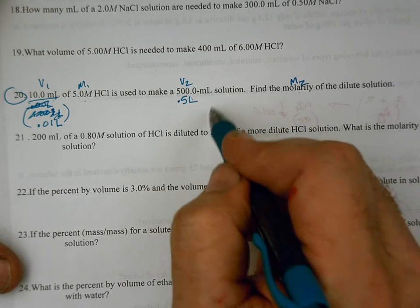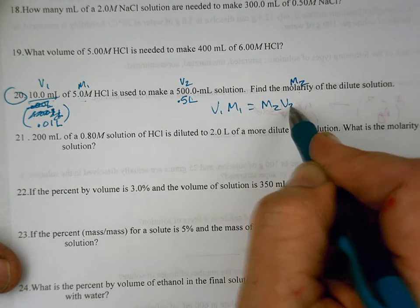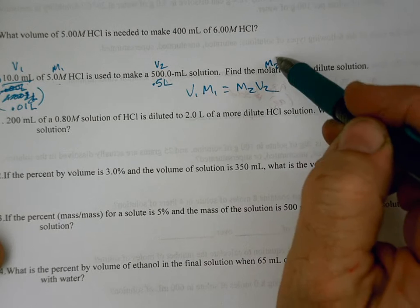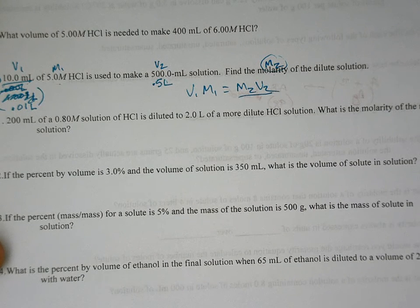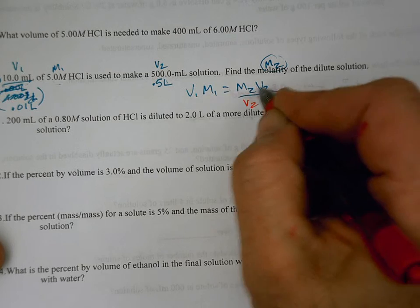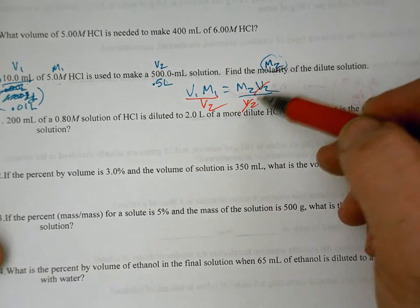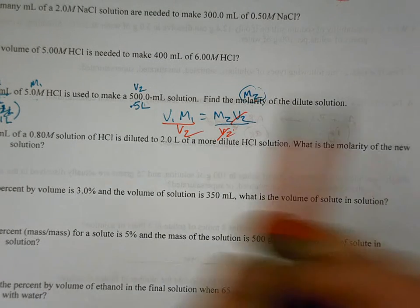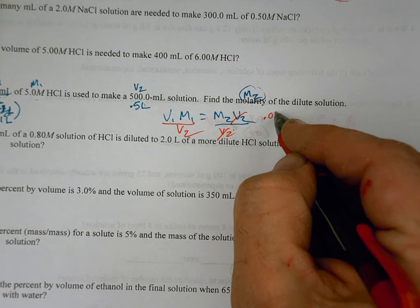And so we're looking for the new molarity. So we should expect the new molarity to be really low. So the base equation is this one. And we're looking for molarity two (M2). So we need to divide by V2 to get it all by itself. Now we just substitute in the numbers for volume one. I'm going to put 0.01 liters.